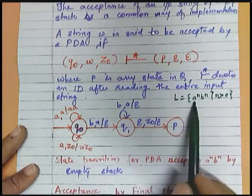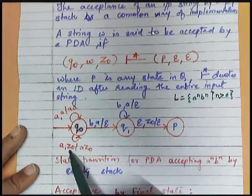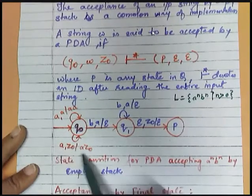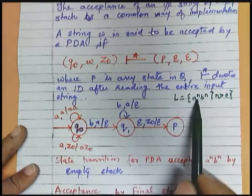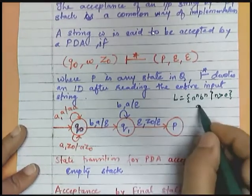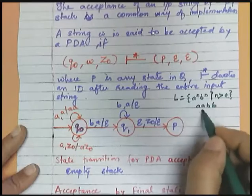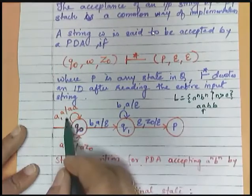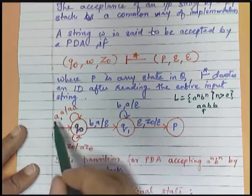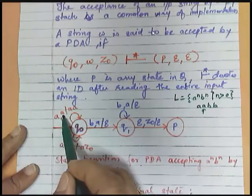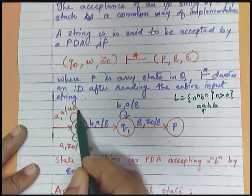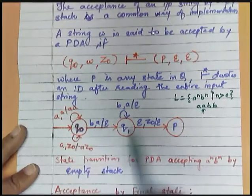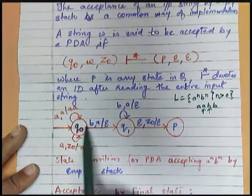Initially when 'a' is read, your stack is empty, you are pushing 'a'. So stack content will become z0 a. In next turn, suppose it is aabb, again you are reading 'a', so it will be following this path. Already top of the stack is 'a' and we are reading 'a', so the stack content will become aa.